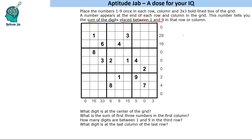That sum of 8 could be a single 8, or 3 plus 5, or 2 plus 6, and so on. Before we solve this puzzle, there are 2 things to keep in mind. One is very simple: if the clue is 0, that means 1 and 9 are adjacent.